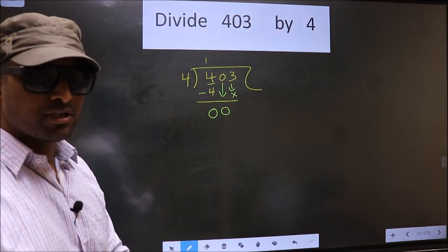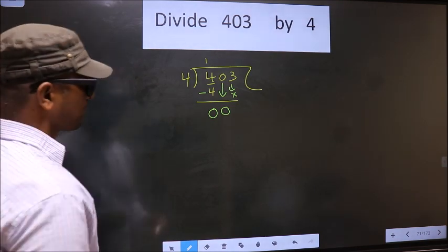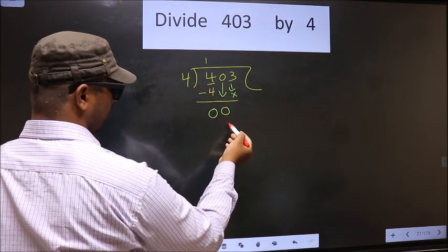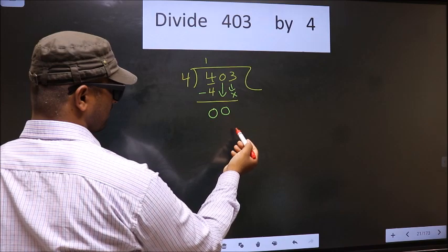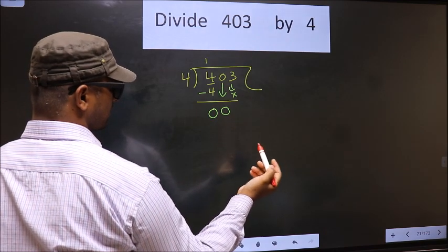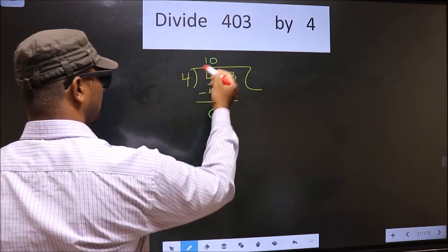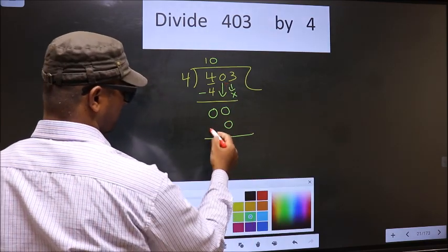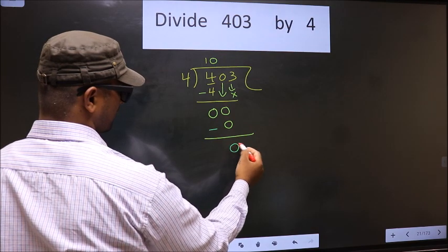So, instead what you should think of is what number should you write here? If you write 4 that is larger than 0. So, what we do is we take 0 here. So, 4 into 0, 0. So, now you subtract 0 minus 0, 0.